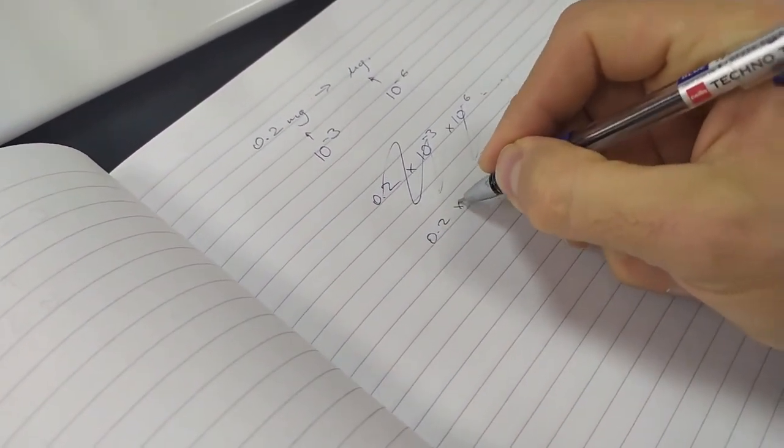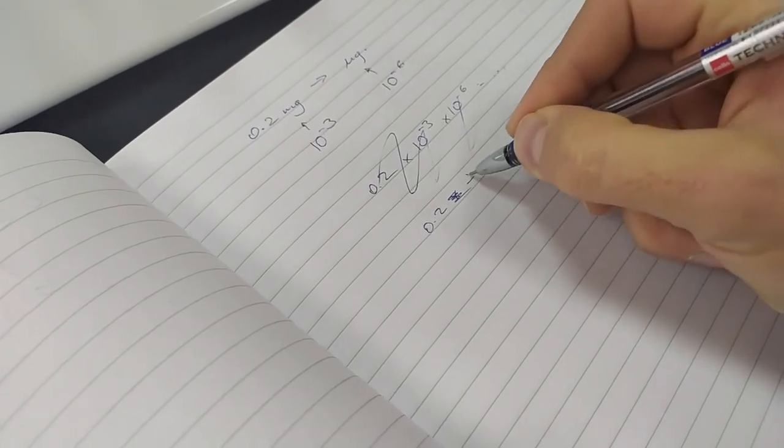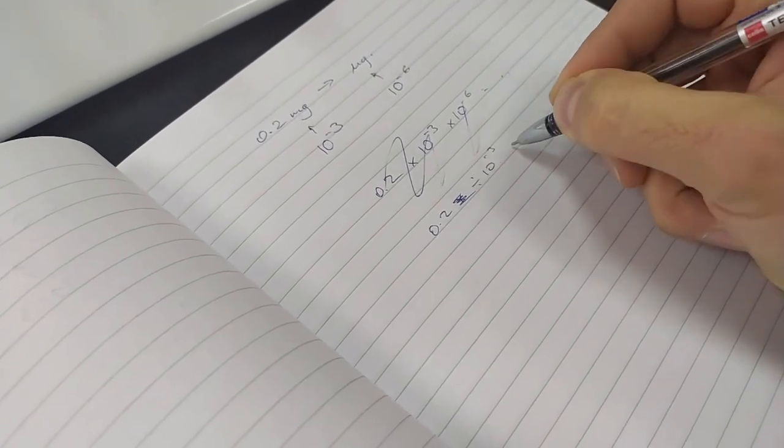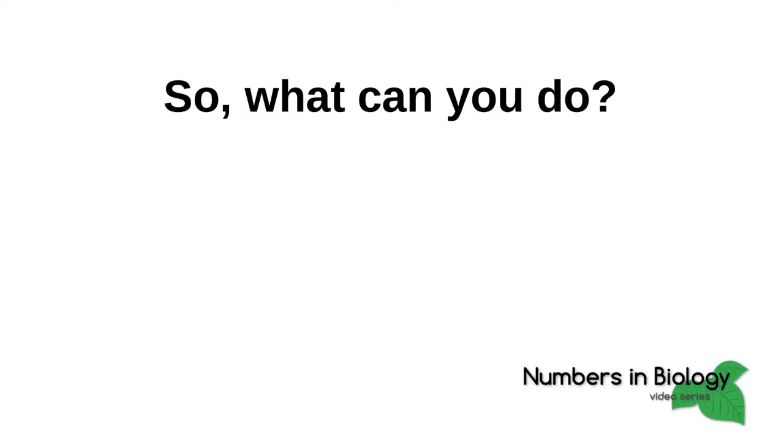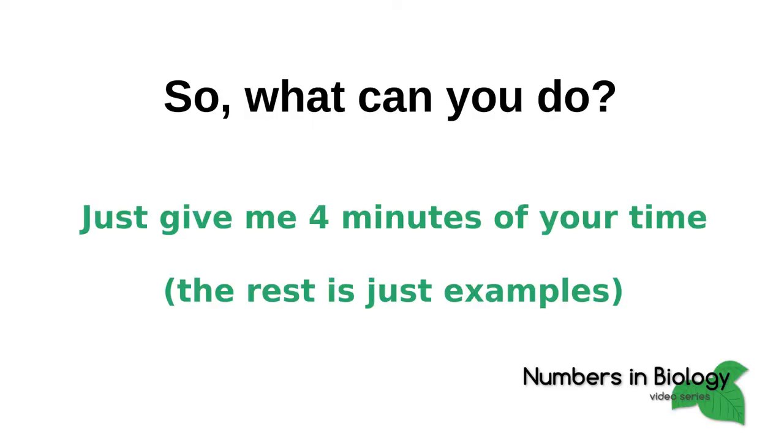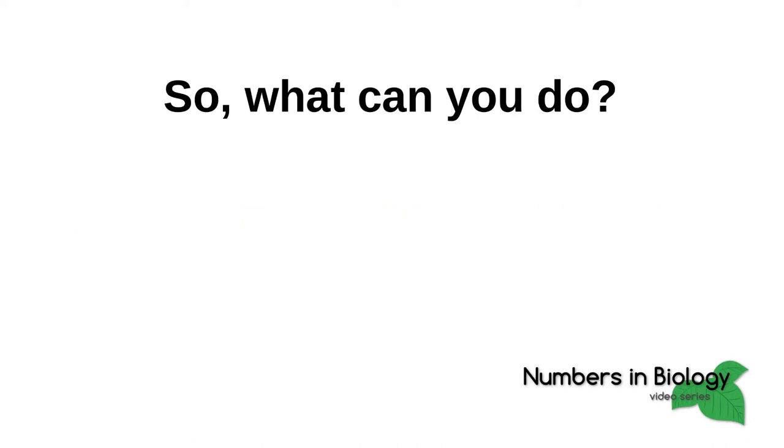Then they try to put it all together somehow. Do I multiply? Do I divide? Why are there so many negative exponents? So is there an easier way? Yes, yes there is.